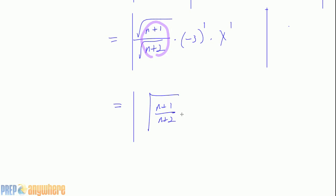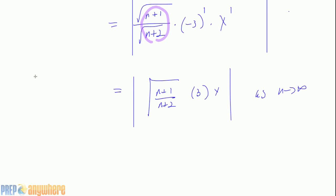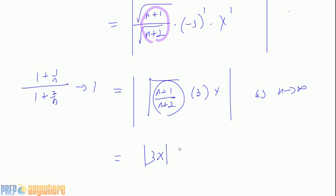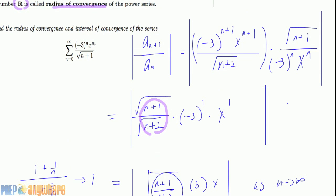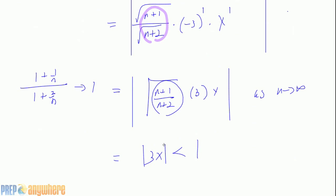Taking the limit: sqrt(n+1) over sqrt(n+2) approaches 1 as n approaches infinity, since dividing top and bottom by n gives a ratio approaching 1. So the entire expression approaches 3|x|. For convergence, 3|x| < 1, so |x| < 1/3. That is the radius of convergence: r = 1/3.